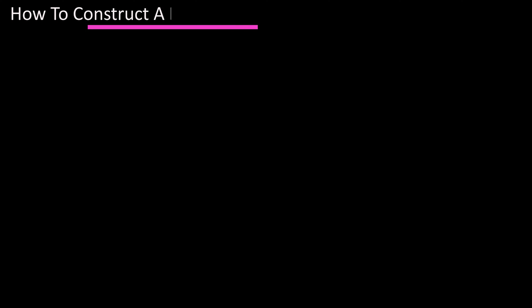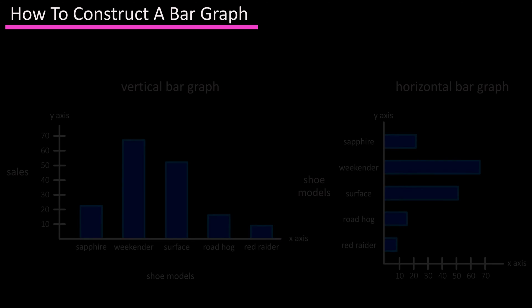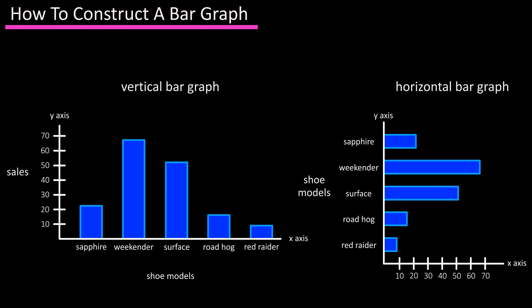In this video we're going to cover how to construct a bar graph. A bar graph uses vertical or horizontal bars whose lengths represent the frequencies of data, and this data is often qualitative or categorical.